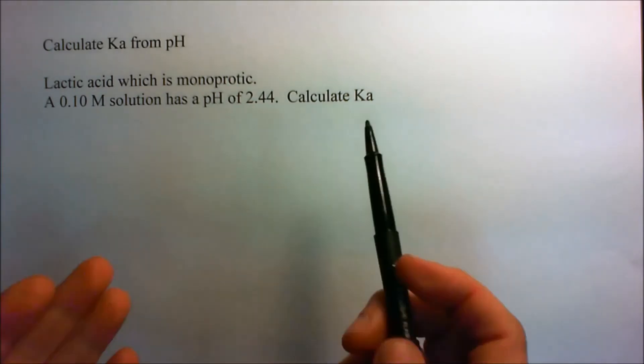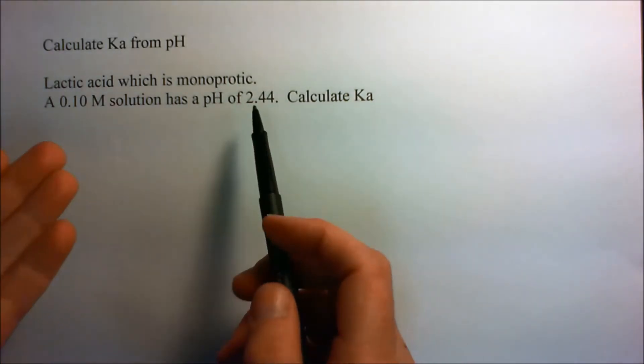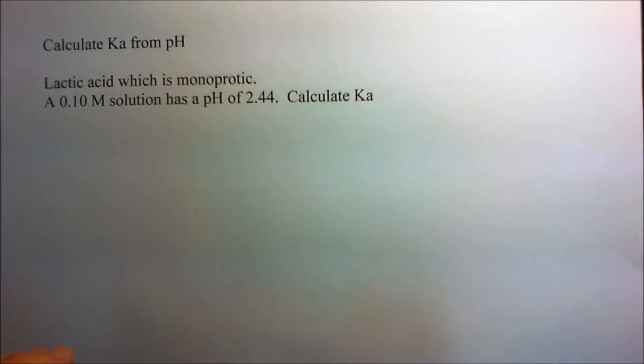So, we have to calculate what is the Ka if we have a pH of 2.44 in a 0.1 molar solution.